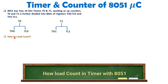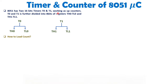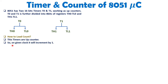Now I will explain how to load the count. T0 and T1 work as up counters, which means the count increases with respect to the clock. With each clock pulse, the count increments by one. That is how these timers operate.